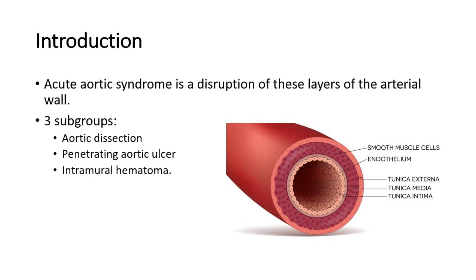The wall of an artery consists of the tunica intima, tunica media, and tunica externa, which are the inner layer, middle layer, and outer layer respectively. An acute aortic syndrome is a disruption of these layers of the arterial wall, and is split into three subgroups: aortic dissection, penetrating aortic ulcer, and intramural hematoma.